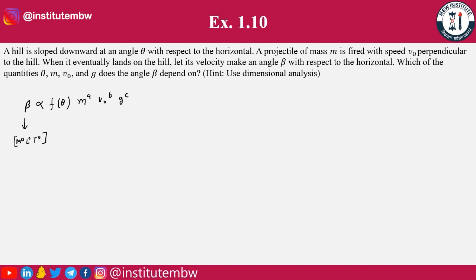In velocity and gravity there is no term for mass, so m will cancel out. So a should be 0. For velocity it is l t^-1, and for gravity it is l t^-2. For mass it is m.